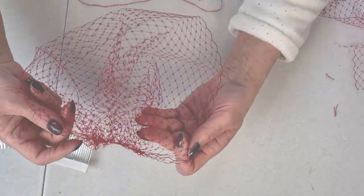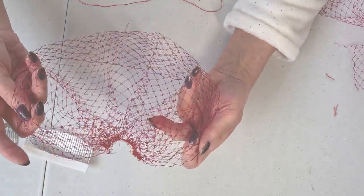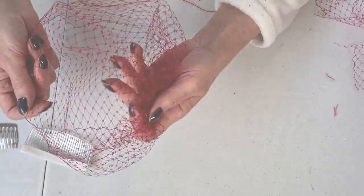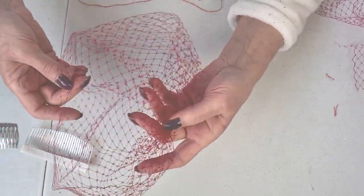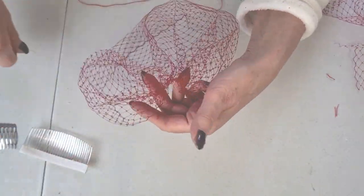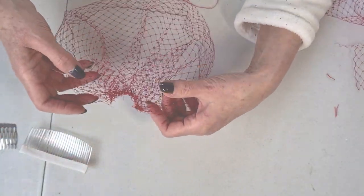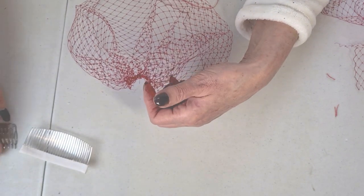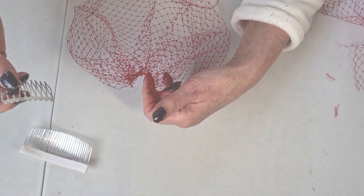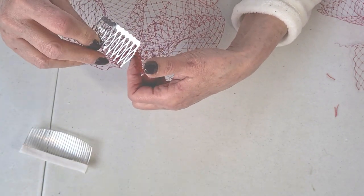All right so there's my birdcage veil which will go around the face and obviously I will be blocking that as well. And then you've got to figure out what comb you're attaching it to, so for this purpose I'm only going to use this red comb.